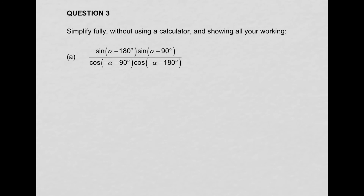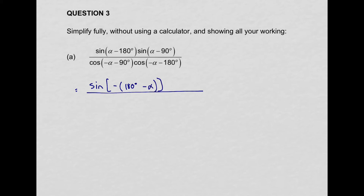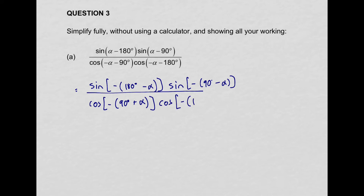Question 3: simplify fully without using a calculator showing all working. In all of these trig ratios we start off with the acute angle, which means the angle given is actually negative. It helps to factorize each of them and take a negative out. So sine becomes minus (180 degrees minus alpha). Then sine (alpha minus 90) becomes sine (negative 90 minus alpha). In the denominator, we get cos (negative 90 degrees plus alpha), and for the last one, cos (minus alpha minus 180) becomes cos (180 plus alpha).